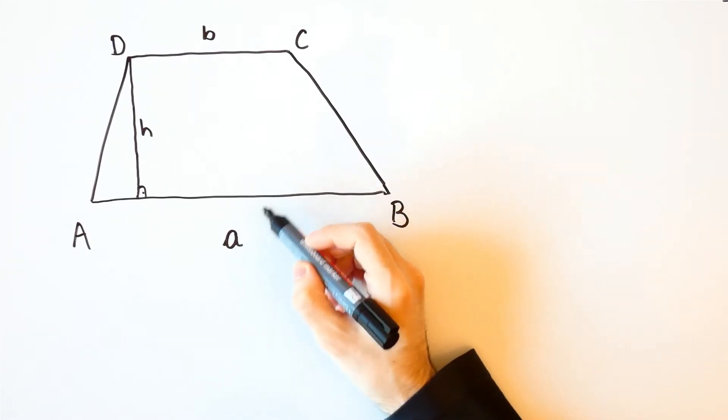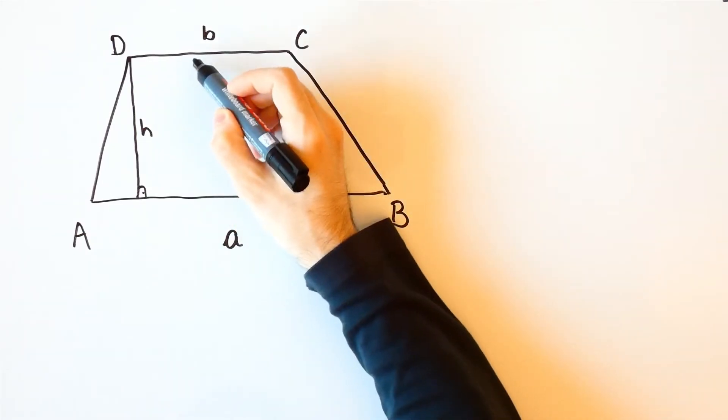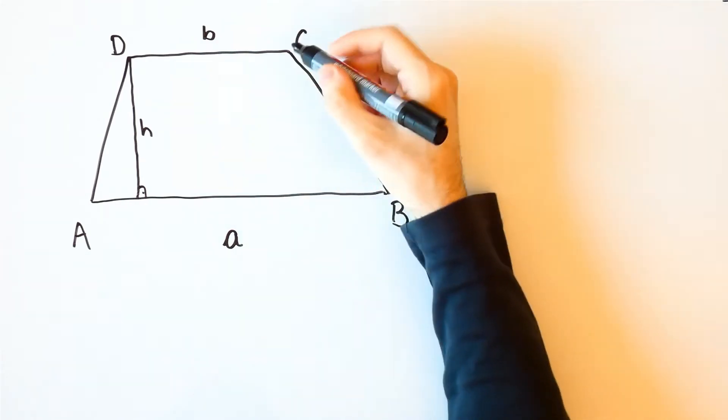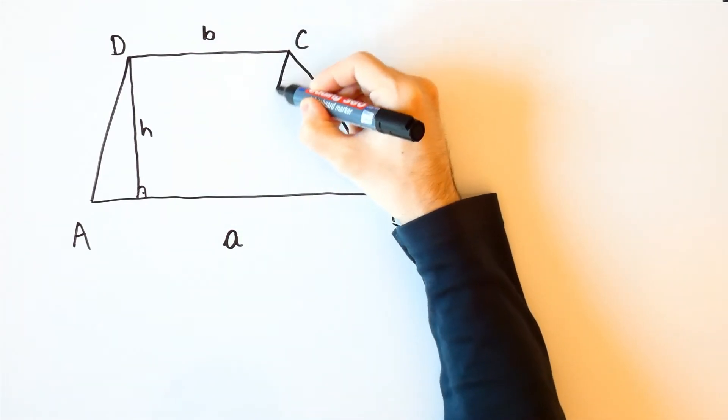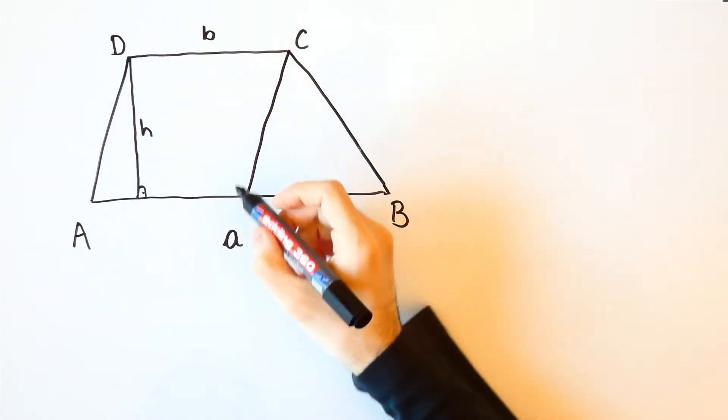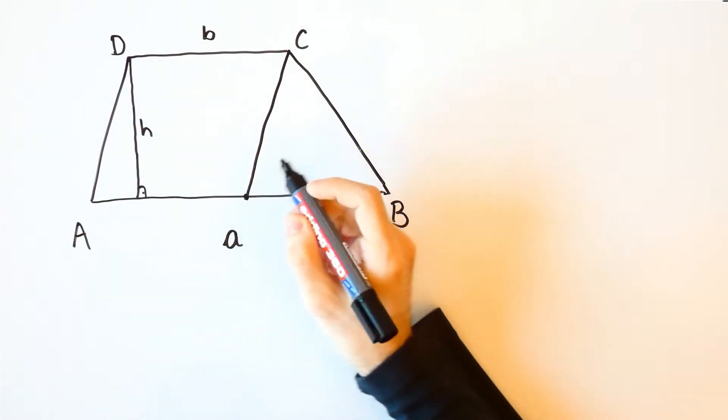Here is a trapezium whose bases are A and B and the height is H and suppose that B is the smaller base. Now, we can draw a line through C such that it is parallel to AD and will denote this intersection by E.